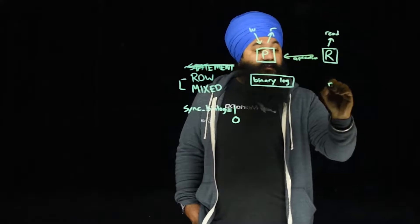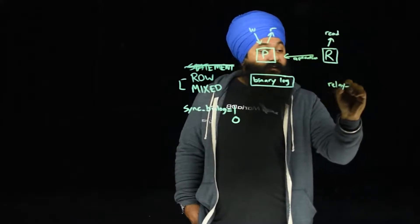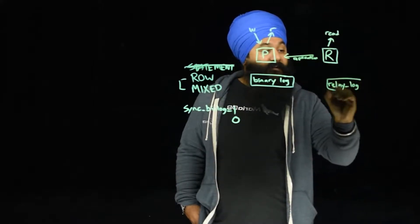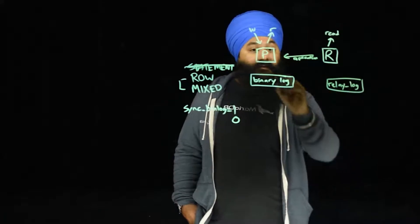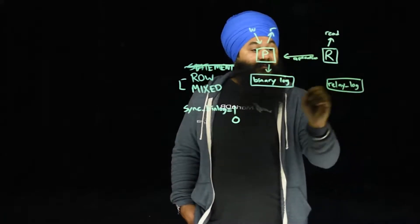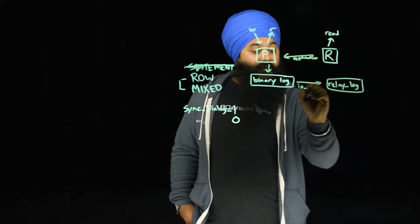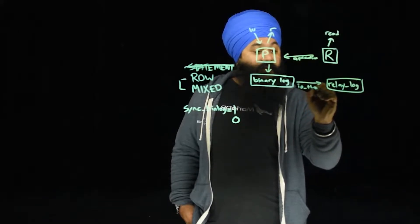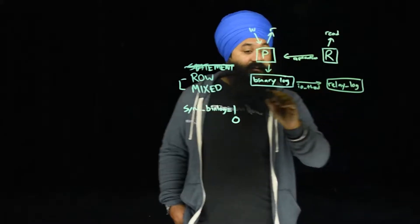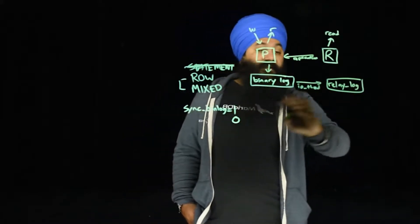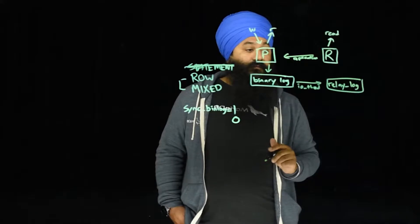And so what the replica does is it creates what's known as a relay log. And that relay log sits on the replica and is created by what is known as the IO thread. And that IO thread is basically the replica connecting to the primary, copying the binary log, and writing it to its local relay log.